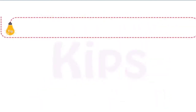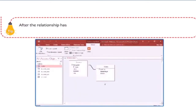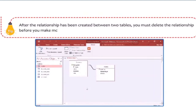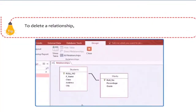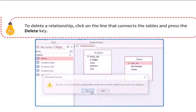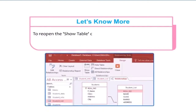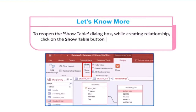After a relationship has been created between two tables, you must delete the relationship before making modifications to the fields on which the relationship is based. To delete a relationship, click on the line connecting the tables and press the Delete key. To reopen the Show Table dialog box while creating a relationship, click on the Show Table button on the Design tab in the Relationships group.